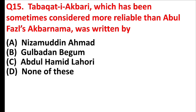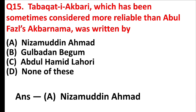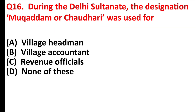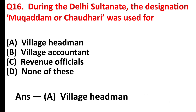Tabakat-i-Akbari, which has been sometimes considered more reliable than Abul Fazl's Akbarnama, was written by Answer is Option A: Nizamuddin Ahmad. During the Delhi Sultanate, the designation Mukaddam or Chaudhary was used for Answer is Option A: Village headman.